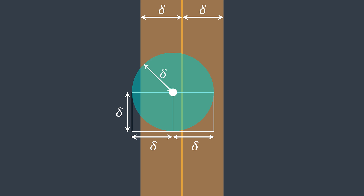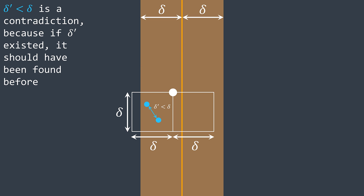This Delta by 2·Delta rectangle can contain at most six points that are mutually at least Delta apart. Why must they be at least Delta apart? Because if two points on the same side were closer than Delta, that would be a contradiction — it would mean Delta is not the smallest distance on that side, but we already found via the recursive call that Delta is the minimum. If a smaller Delta prime existed, we would have found it earlier.